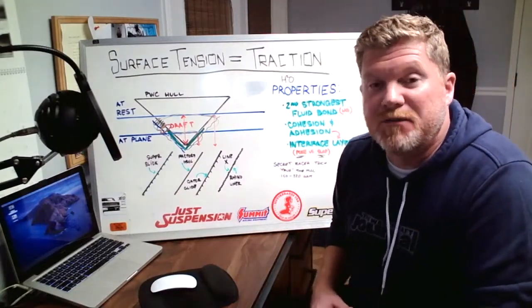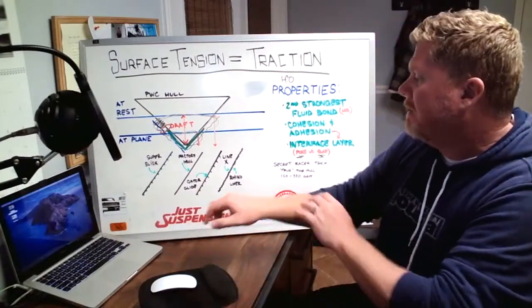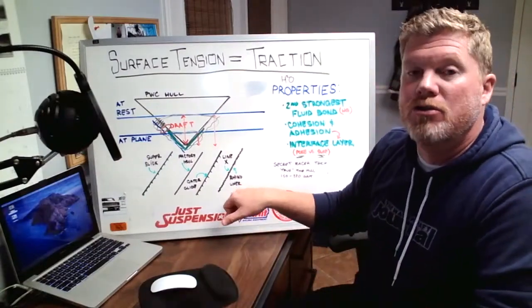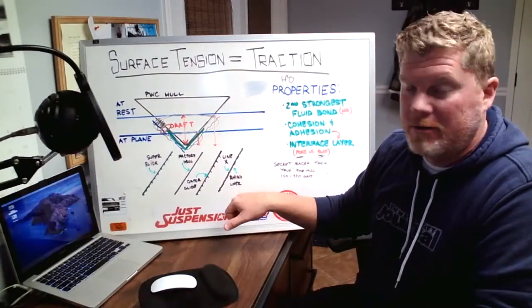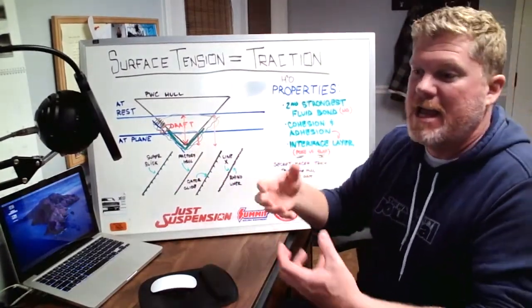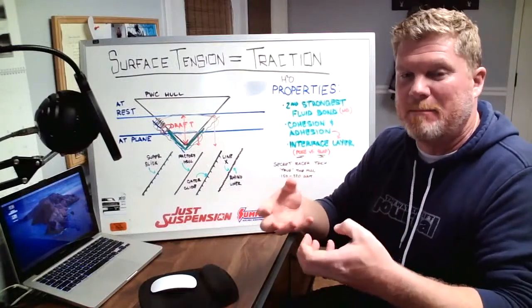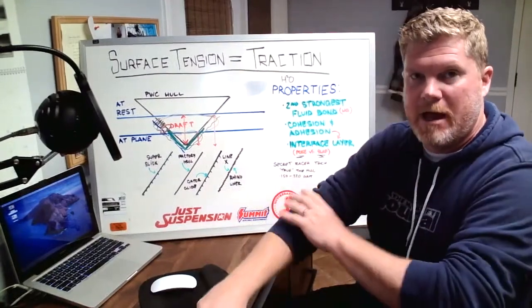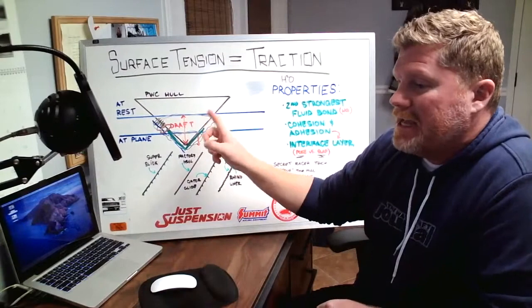What does that do? That produces heat. It's friction. Rhino liner will slow you down hard because it literally breaks up the interface layer and creates heat and heat is the by-product of friction. That is a huge deal.